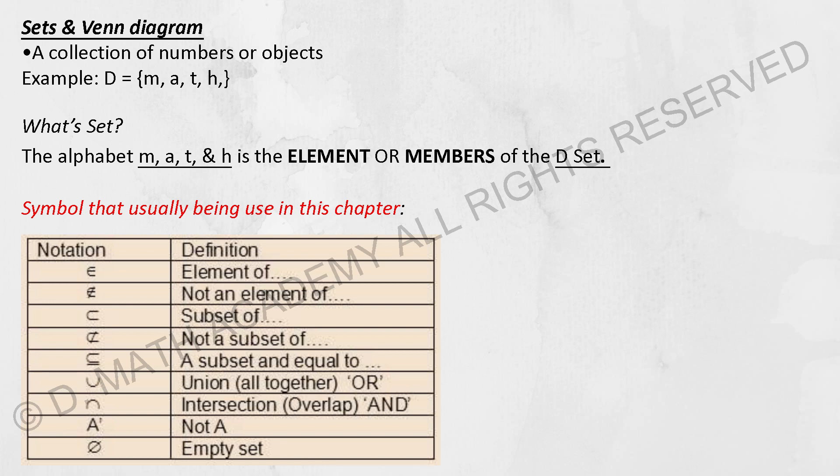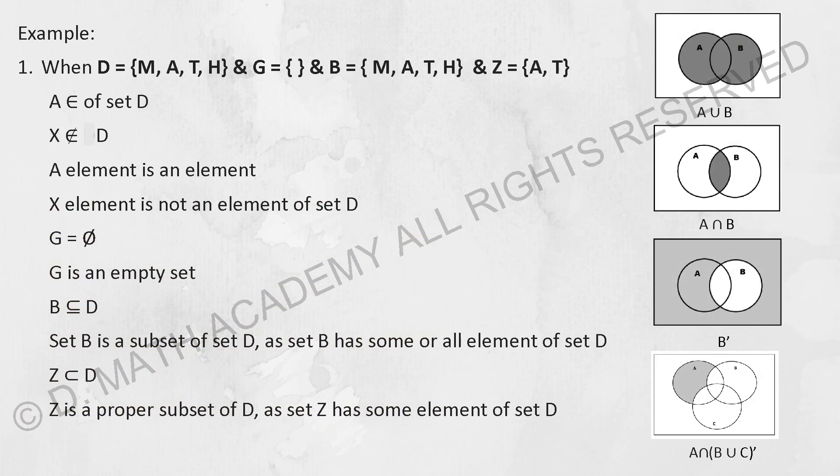So let's go through some examples. So when D equals to {M, A, T, H}, G is {}, B is {M, A, T, H}, Z is {A, T}.